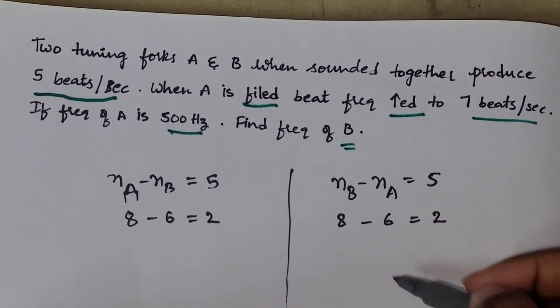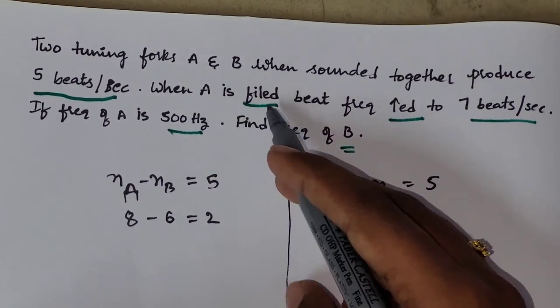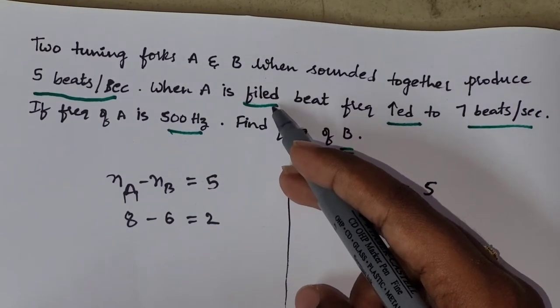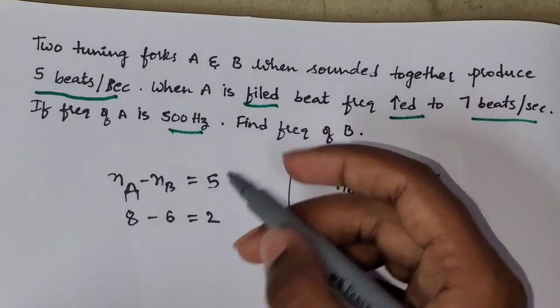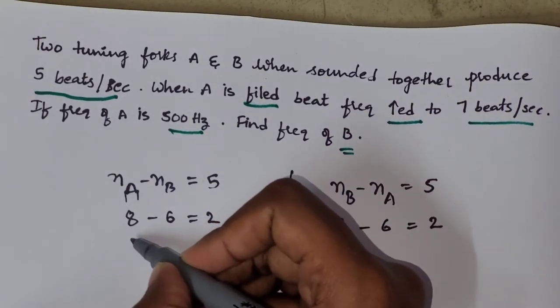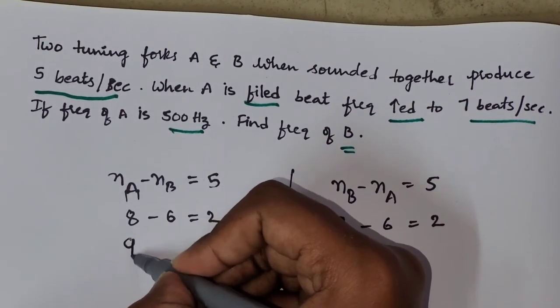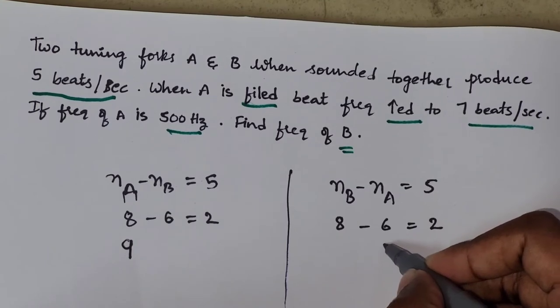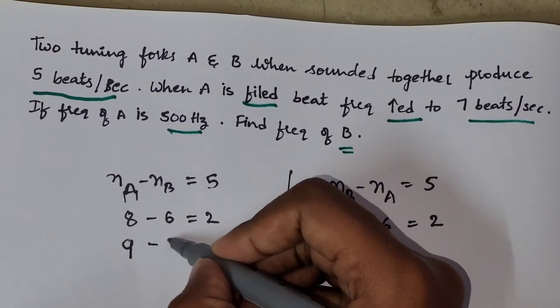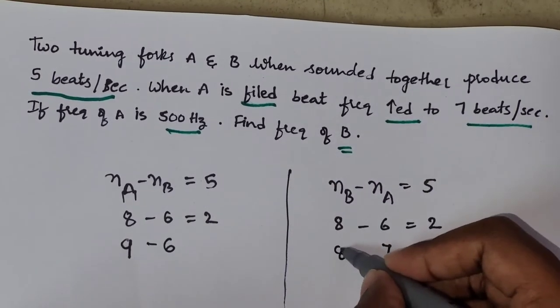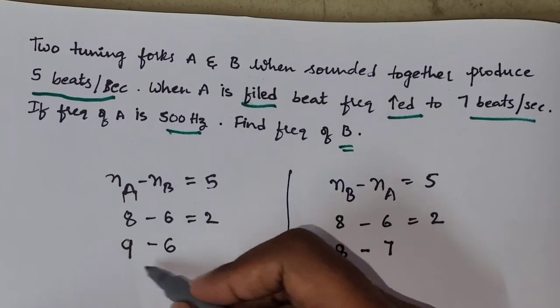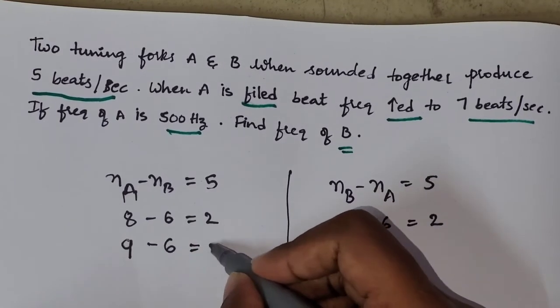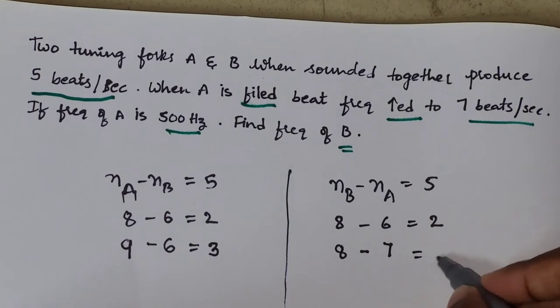Now, let's read the question again. When A is filed, filed nothing but frequency get increased. So, you have to change 8 to 9 and 6 to 7. Write these as it is. Now, subtract these. It will be 3 and this will become 1.